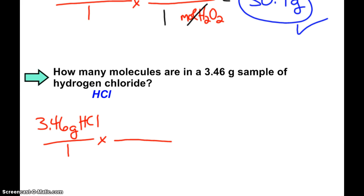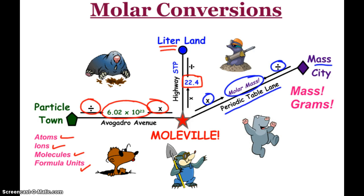So, I'd love to change my grams to molecules, but as I look at my map, there's something between grams and molecules. That's the mole. So, I'm going to have to do two steps. I first need to divide by the molar mass. Then, I need to multiply by Avogadro.